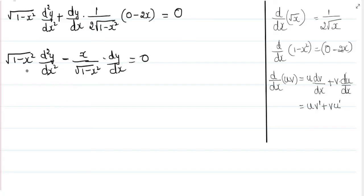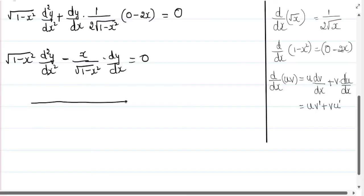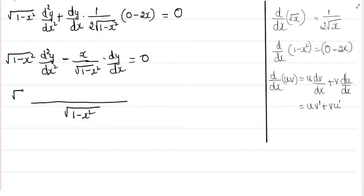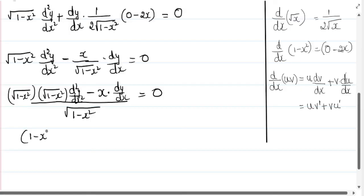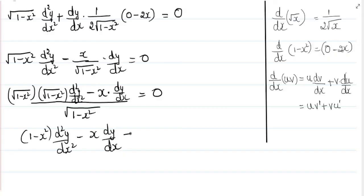Now, I will take the LCM. Here the denominator is 1, and here it is root of 1 minus x squared, so the common denominator is root of 1 minus x squared. Upon taking the LCM, we get root of 1 minus x squared times root of 1 minus x squared times d squared y by dx squared minus x times dy by dx, equal to 0. Since root of 1 minus x squared times root of 1 minus x squared equals 1 minus x squared, we get 1 minus x squared times d squared y by dx squared minus x times dy by dx equals 0.